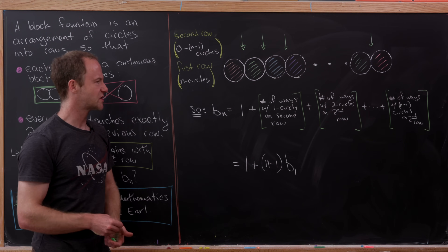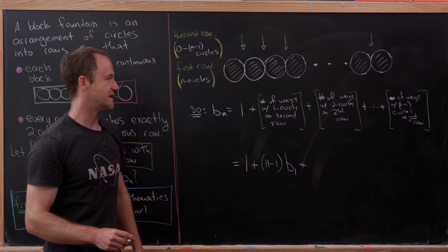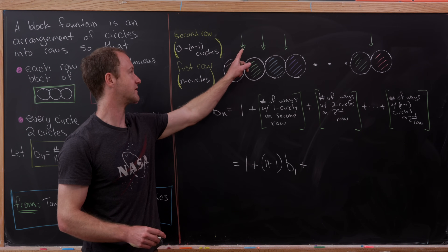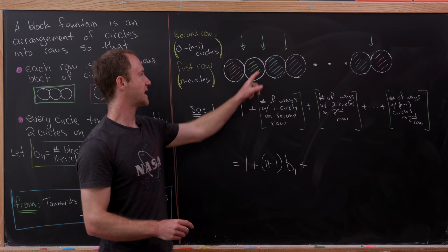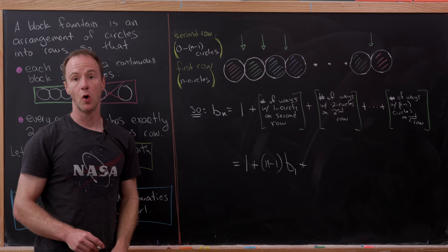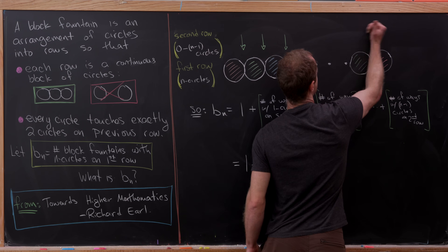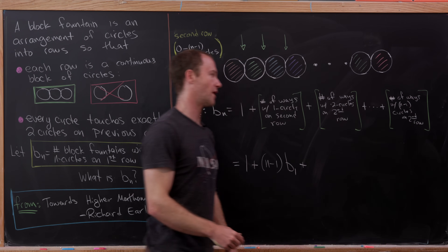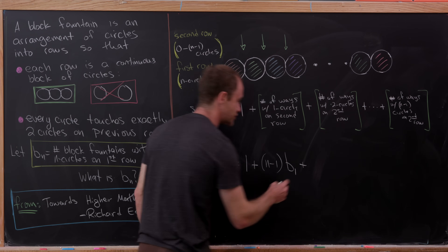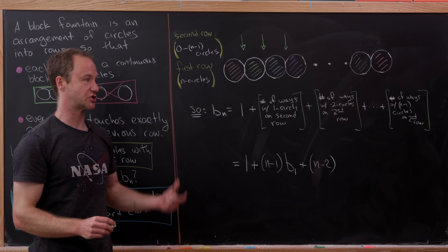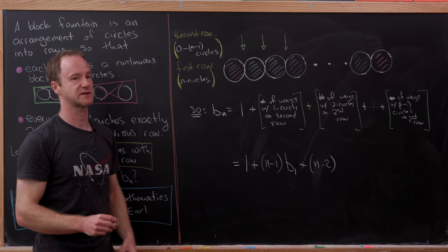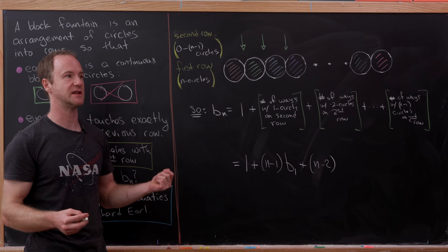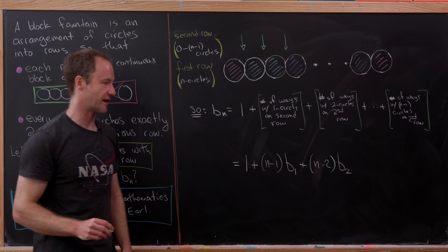For two circles on the second row, we start the pair of circles at various positions, but we cannot start in the last spot because the next circle would only touch one below. So there are n minus 2 starting positions for two circles on the second row. Since we're building a block fountain on top, that gives n minus 2 times b_2.